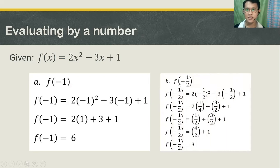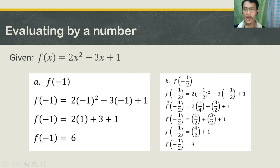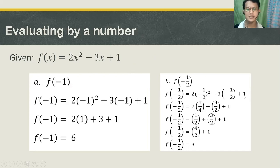Letter B — finding f of negative 1 half. Just the same, follow the same process. You need to substitute the value negative 1 half to your x's in your function. This will turn your equation into f of negative 1 half is equal to 2 times the quantity of negative 1 half, squared, minus 3 times the quantity of negative 1 half, plus 1.